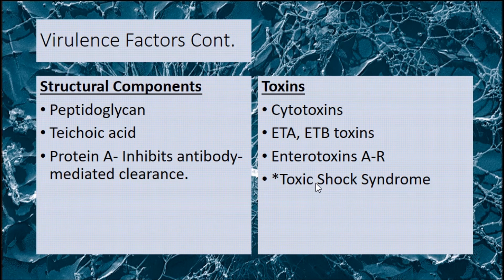Very important to know: toxic shock syndrome toxin, which is a superantigen that stimulates proliferation of T cells, releases cytokines, and produces leakage or cellular destruction of endothelial cells. This is very important — definitely write that down if you are taking notes or if you have this for a class.